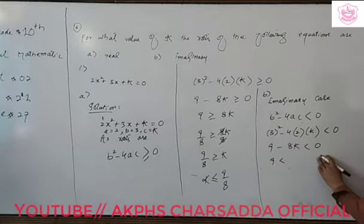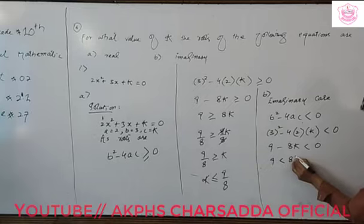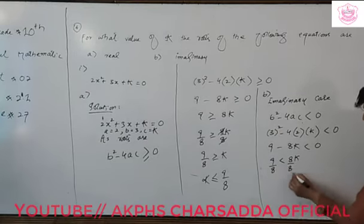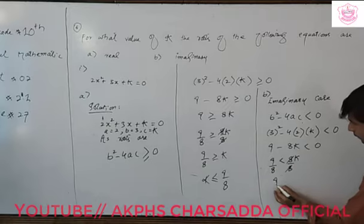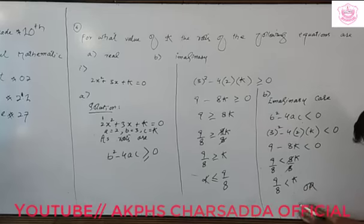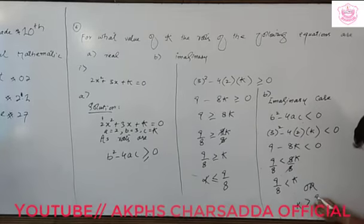9 minus 8k. We shift minus 8k to the right hand side of the inequality, so it becomes plus 8k. Dividing both sides by 8 gives us 9 by 8 is less than k, or k is greater than 9 by 8.